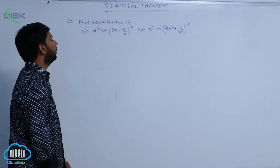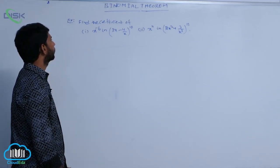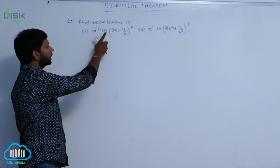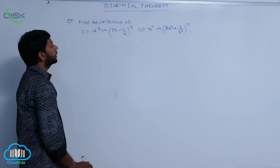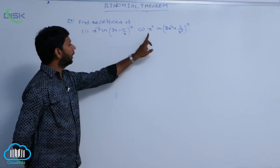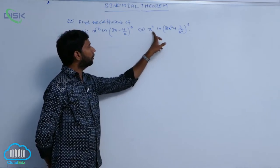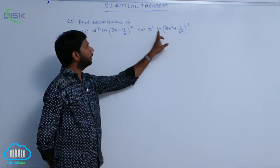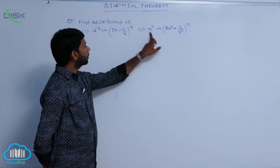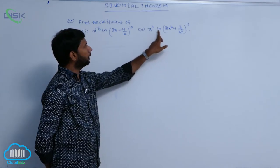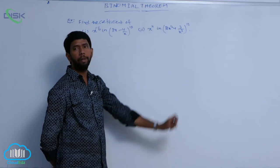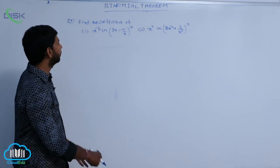In the next example, find the coefficient of x power minus 6 in the expansion of (3x minus 4/x) whole power 10, and coefficient of x power minus 11 in the expansion of (2x squared plus 3/x cubed) whole power 13.